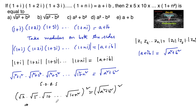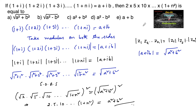So which implies that 2·5·10·...·(1+n²) = a²+b², which is the correct answer (third option).